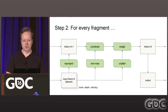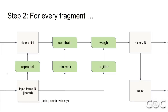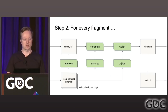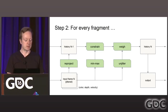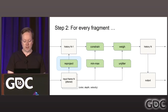The temporal pass takes a full-screen input frame — the raw output from the rasterizer and all post-processing passes — including color, depth, and velocity.